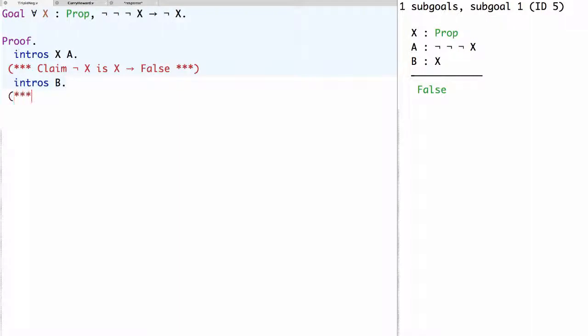Next, let's look at this assumption A, the assumption of the triple negation of x. It's the same as the double negation of x implies false. So this means we can apply A, and the result will be to reduce the claim we need to prove from false to the double negation of x.